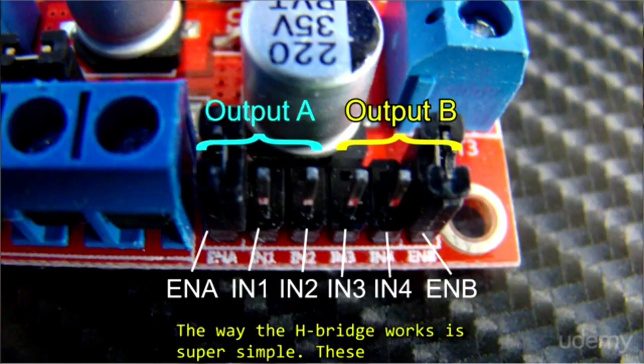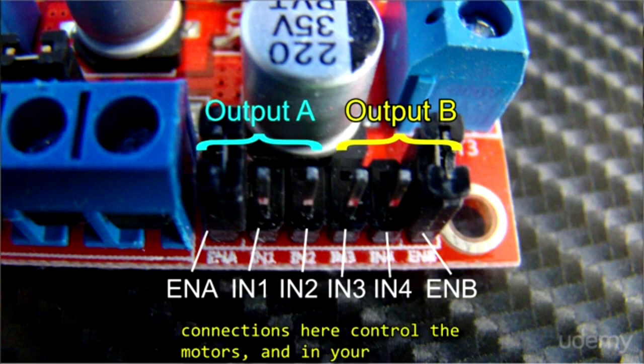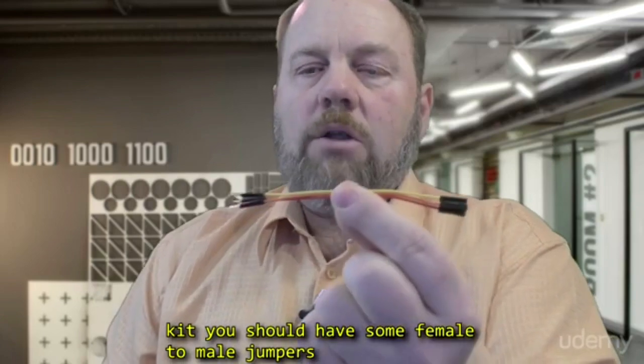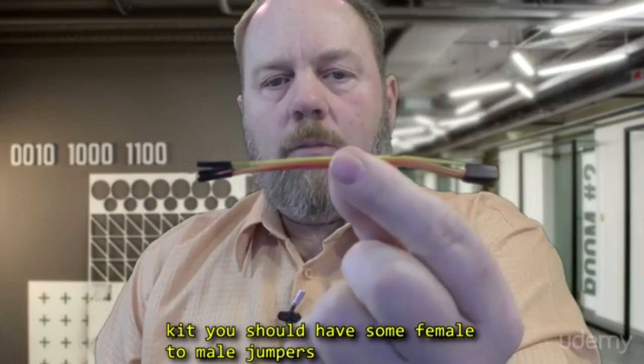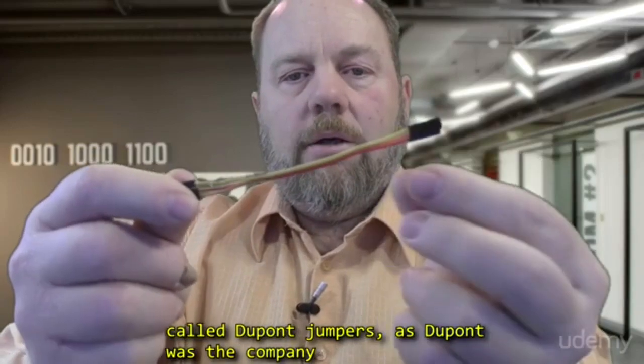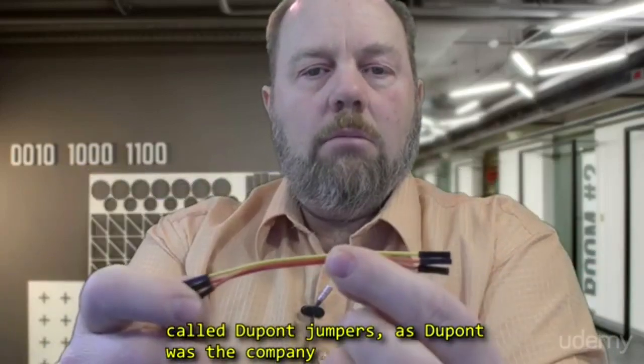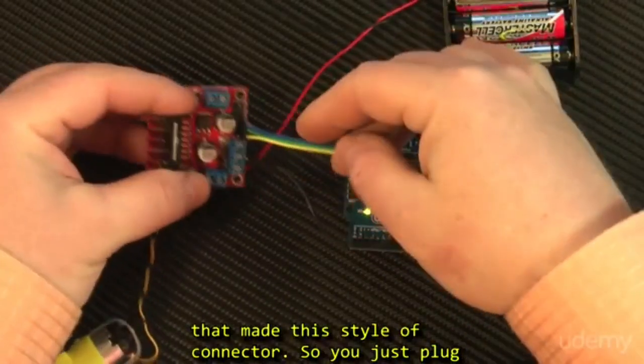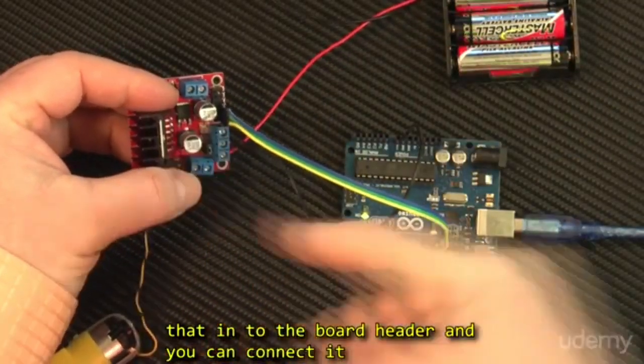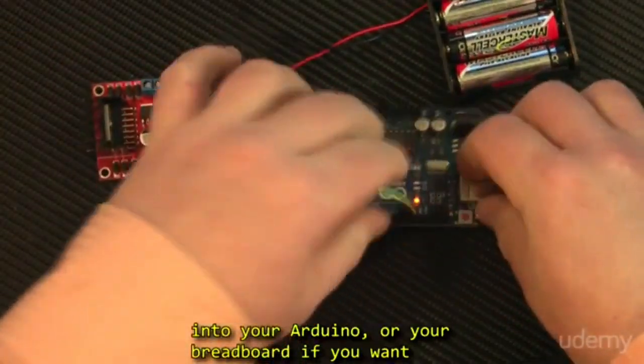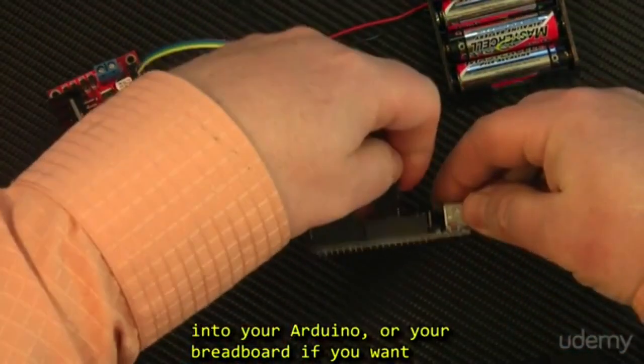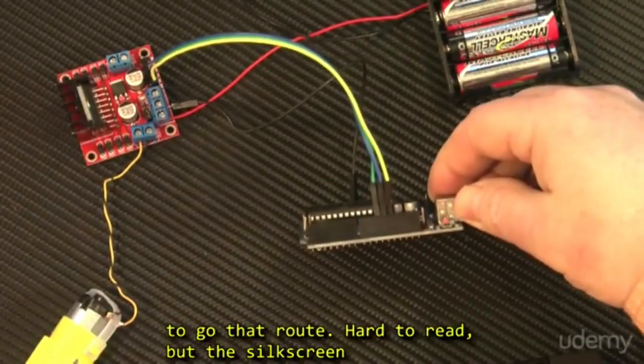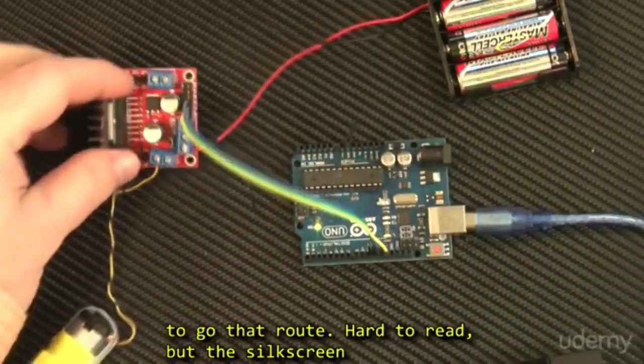The way the H-Bridge works is super simple. These connections here control the motors, and in your kit you should have some female to male jumpers, called DuPont jumpers, as DuPont was the company that made this style of connector. So you just plug that to the board header and you can connect it to your Arduino or your breadboard if you want to go that route.